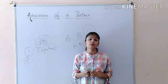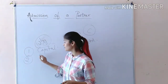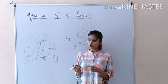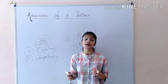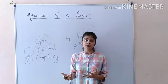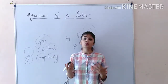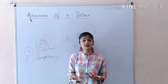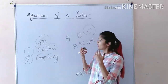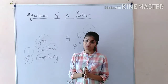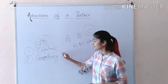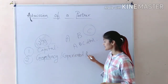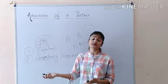The second reason can be competency. Suppose the existing partners want a competitive and experienced partner so that their enterprise can work more efficiently. When a more competent or experienced partner is required for the efficient working of the organization, a new partner can be admitted. So the second reason is a competent or experienced person.